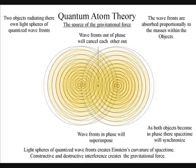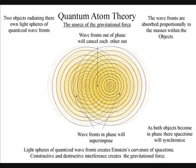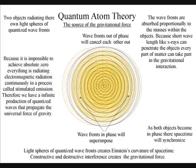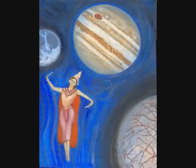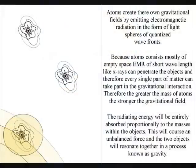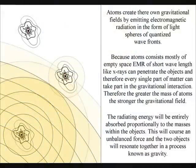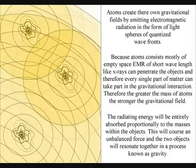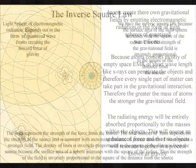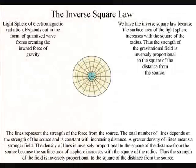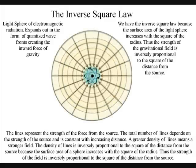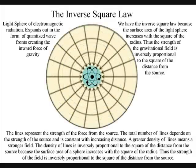The radiating energy will be entirely absorbed proportionally to the masses within the objects. This will cause an unbalanced force, and the two objects will resonate together in a process known as gravity. Because atoms consist mostly of empty space, electromagnetic radiation of short wavelengths, like x-rays, can penetrate the objects, and therefore every single part of matter can take part in the gravitational interaction. We have the inverse square law because the surface area of the light sphere increases with the square of the radius, thus the strength of the gravitational field is inversely proportional to the square of the distance from the source.